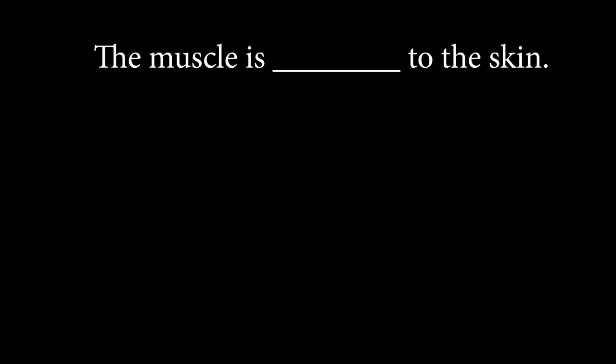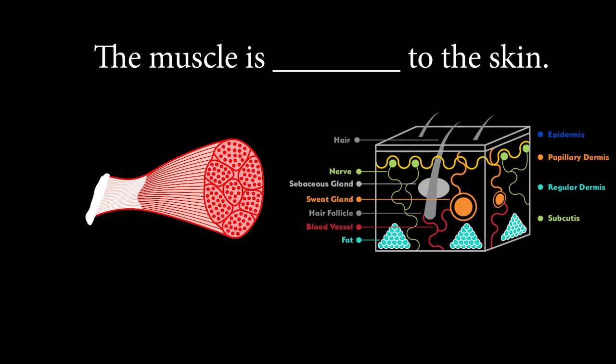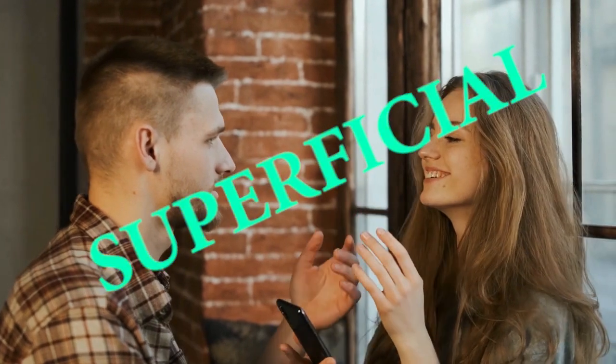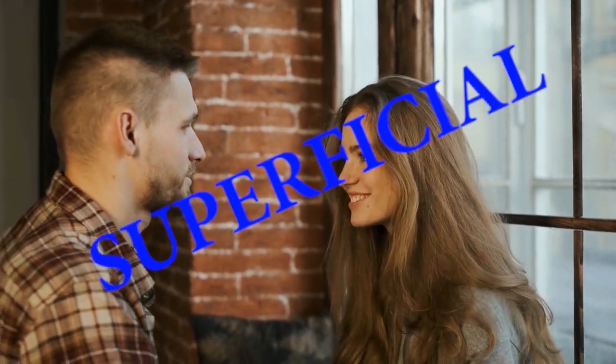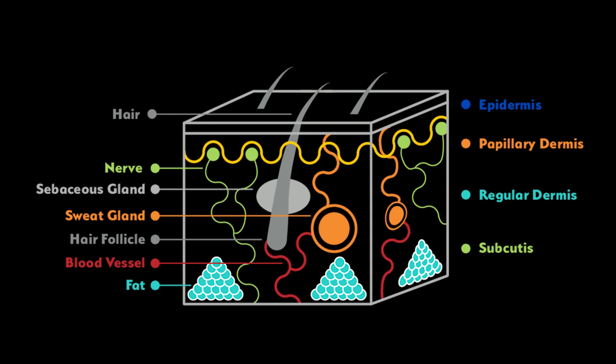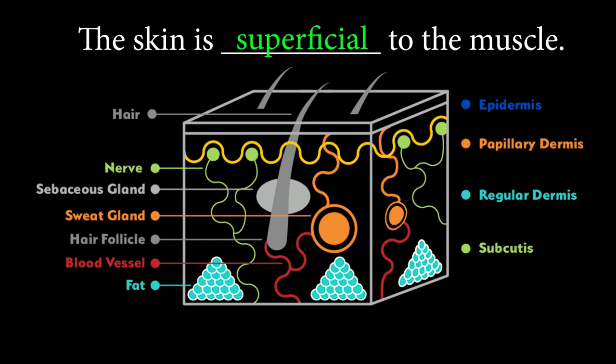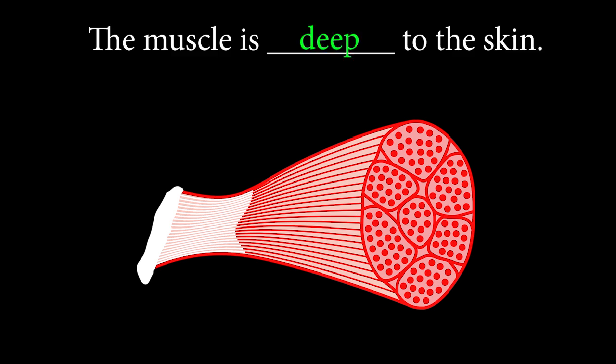Last one — this one may be tricky, but if you use the handout in the description box, I know you can do it. The muscle is ___ to the skin. If you said deep, you are correct. When a guy likes a girl solely based on how they look, you'd call him superficial — meaning he likes just what he sees on the surface. So since the skin is toward the surface of the body, we say the skin is superficial to the muscle. And since the muscle is away from the body's surface, we say the muscle is deep to the skin.